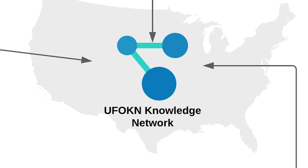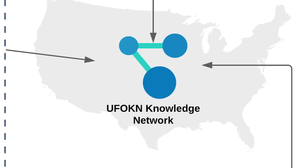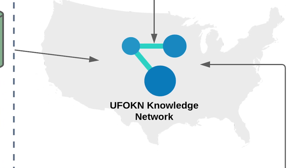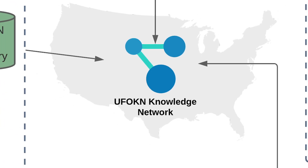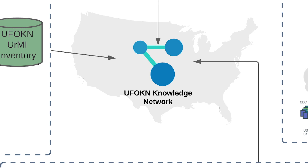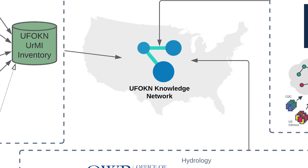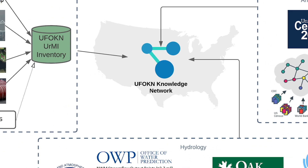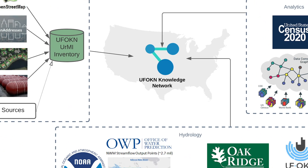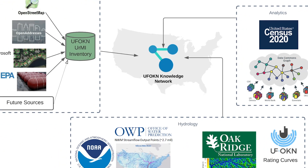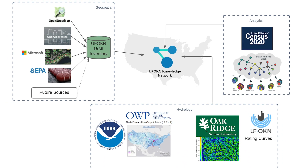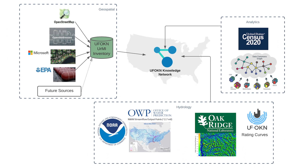The Urban Flooding Open Knowledge Network, or the UFOKN, can solve this problem. It is a common infrastructure that supports data from several urban systems to provide information about the impacts of flooding at individual infrastructure features across the continental US.